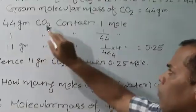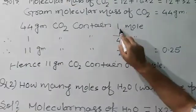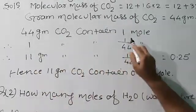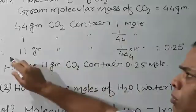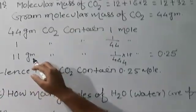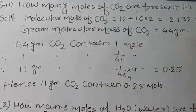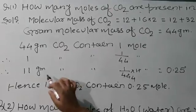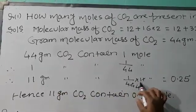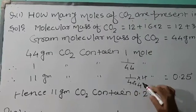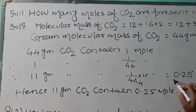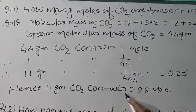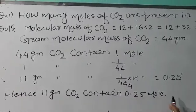Therefore, 1 gram of CO2 contains 1 by 44 mole. In the question, we need to find out how many moles are present in 11 grams. So, 11 grams CO2 contains 1 by 44 into 11, which equals 1 by 4, equal to 0.25. Hence, 11 grams of CO2 contains 0.25 mole.